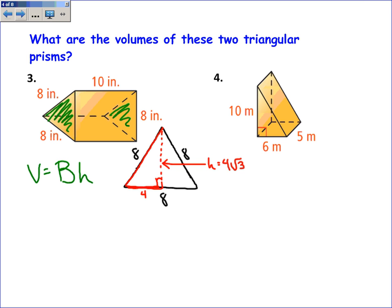So the area of the base, since it's a triangle, is 1/2 times the base of the triangle, which is 8, this length right here is 8, times the height of 4 root 3. And you're multiplying that times the height of the prism, 10.